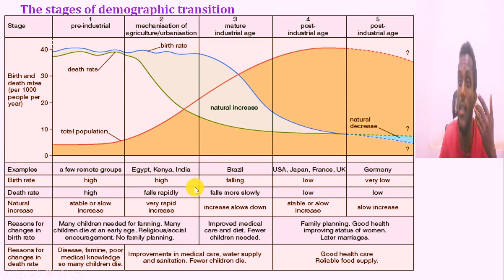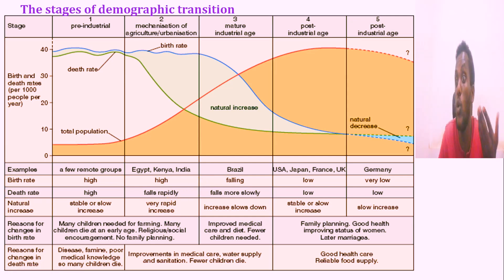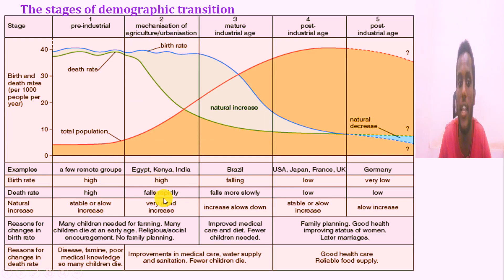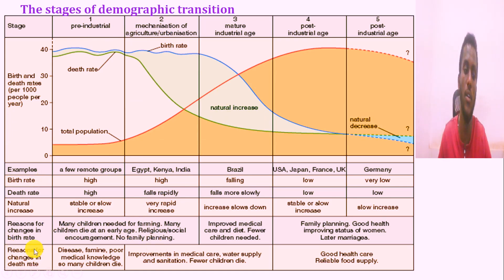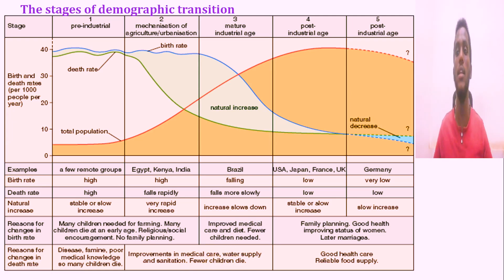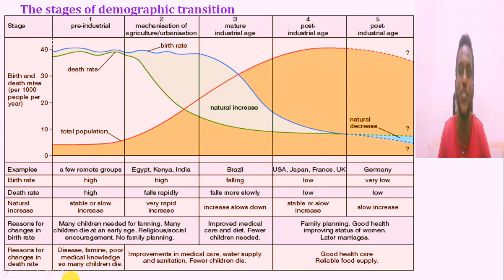With mechanization in the pre-industrial to industrial transition, improvements in medical care, water supply, and sanitation led to population growth. The death rate begins to fall while the birth rate remains high, causing the population to increase rapidly during the industrial age.